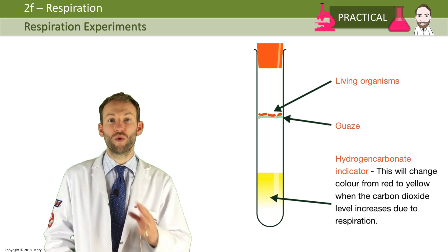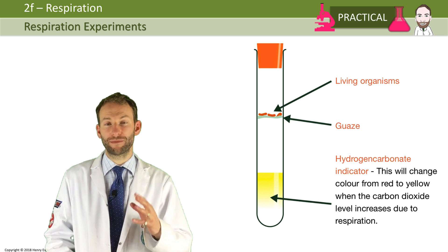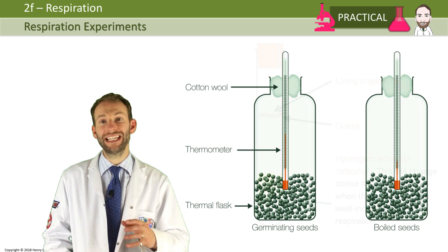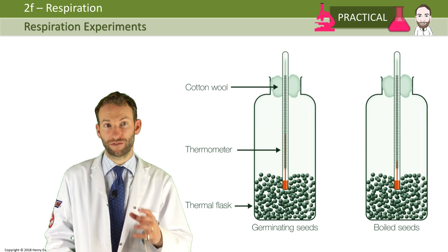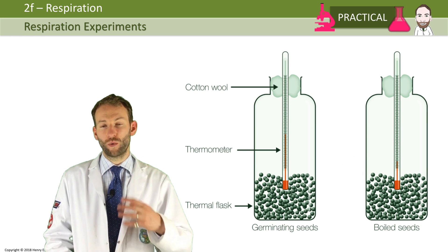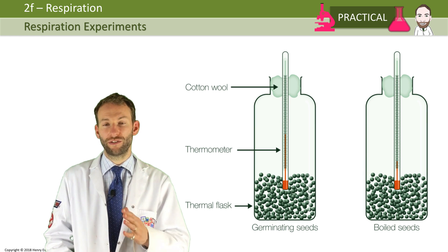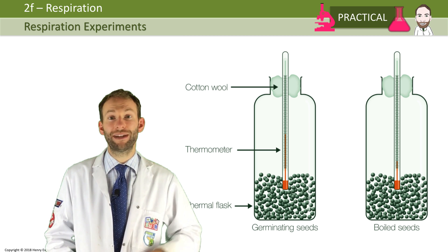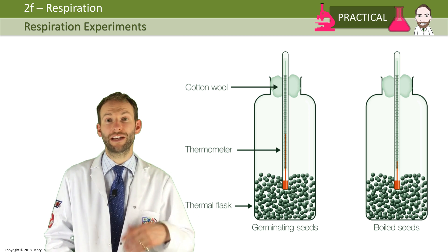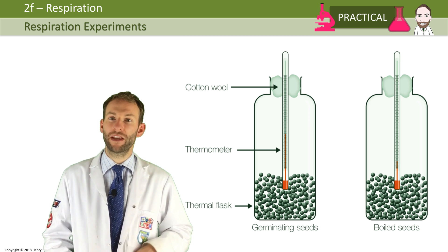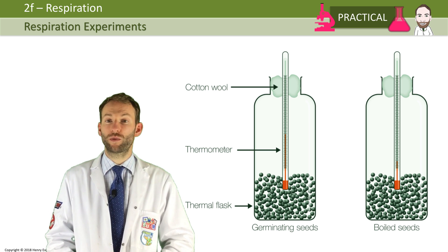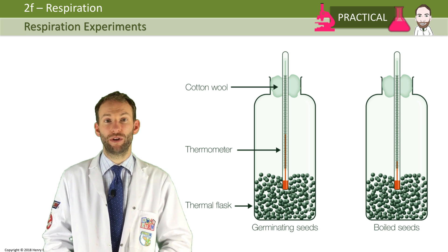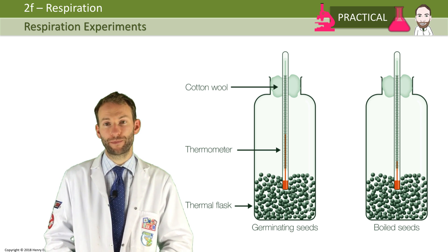Remember to control all the other variables to make it a valid experiment. Now, in order to show that heat is produced, you can use this very simple apparatus — two thermos flasks. One has got germinating seeds in it; germinating seeds are alive and respiring. The other one's got boiled seeds in it, which will be dead because they have been boiled and all the enzymes have been denatured.